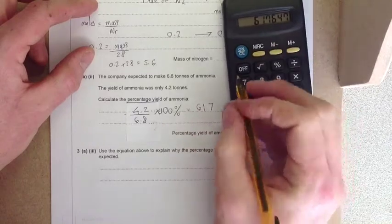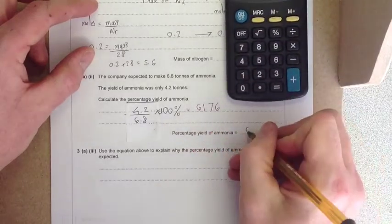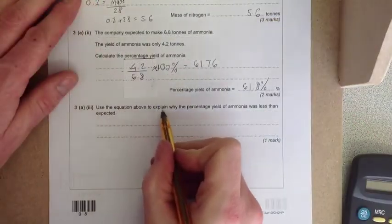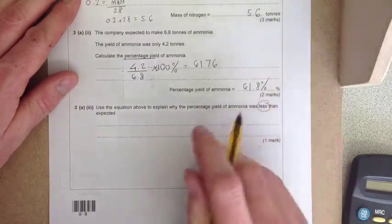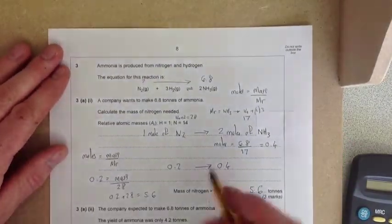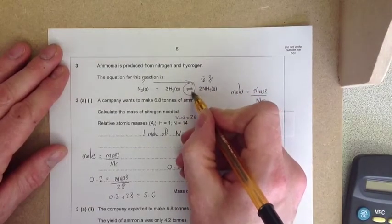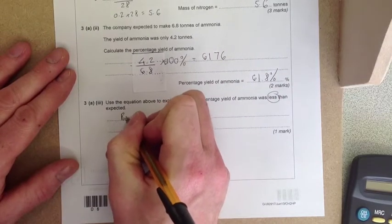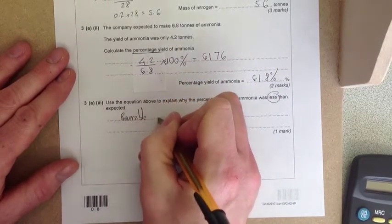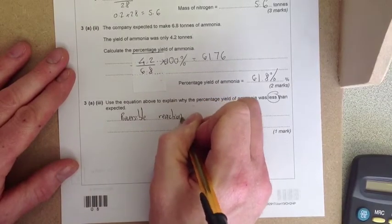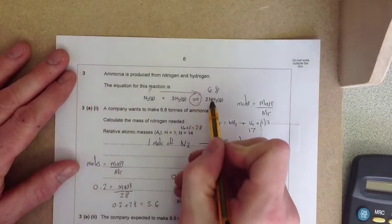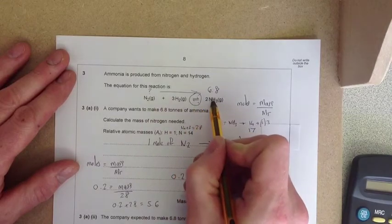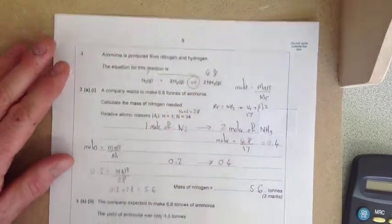The question asks: use the equation to explain why the percentage yield was less than expected. If you look at the equation, this sign here means that the reaction is reversible. So when ammonia has been produced, it can go back the other way to hydrogen and nitrogen, which is why you're getting lower than expected.